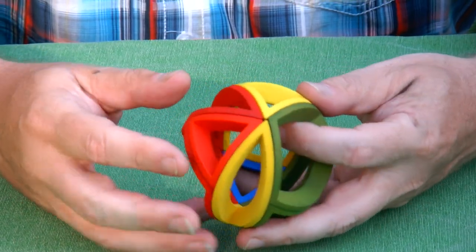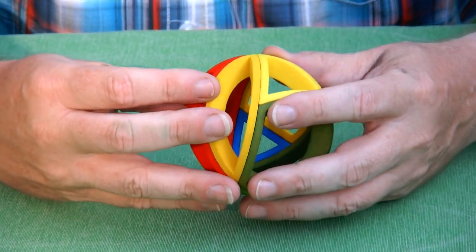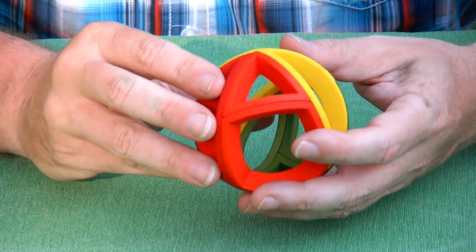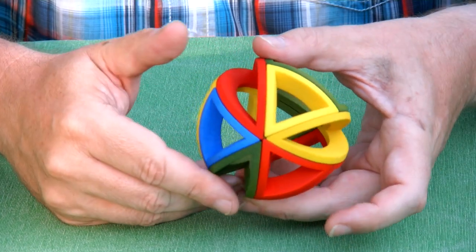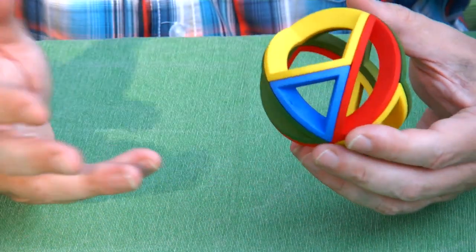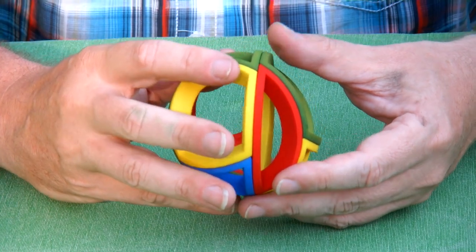From the right-handed symmetry we can go to, for instance, left-handed and then we can move back to the symmetrical shape. So we have several combinations of moves.